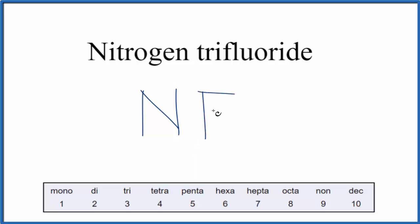For fluoride, that's the fluorine atom, we have tri. Tri is three, like triangle, so we have three fluorine atoms. So the formula for nitrogen trifluoride is NF₃.